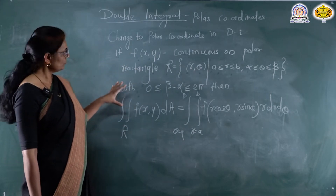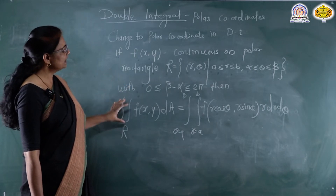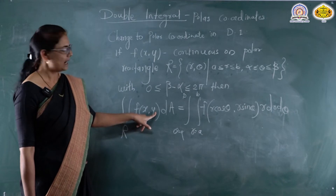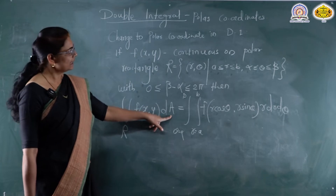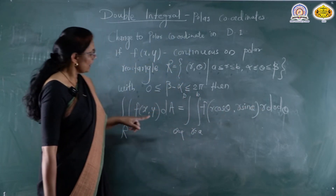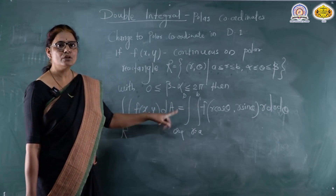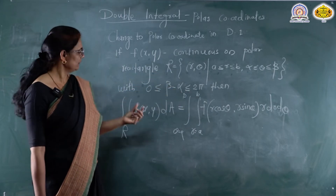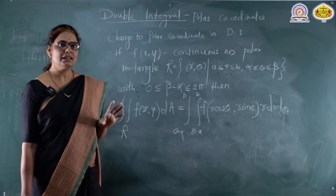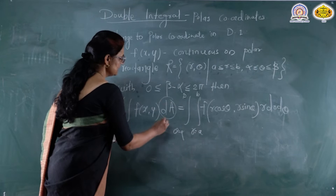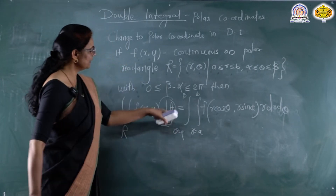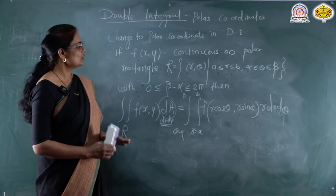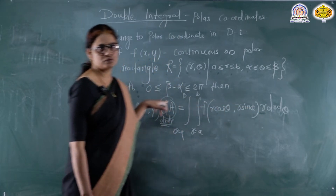Remember: in this formula we convert the double integral into polar coordinates by writing x = r cos theta, y = r sin theta, and replacing dA (or dx dy) by r dr dθ. We also write the limits of integration in terms of r and theta. Don't forget to include the extra factor r — it is very important.